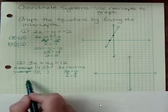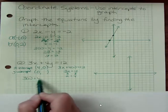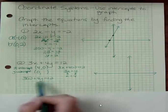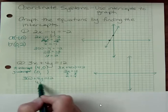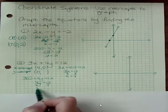And for the second one, what if x is zero? Then you have 3 times zero, 4y equals 12. This goes away. 4y is 12. Dividing both sides by 4, I get y equals 3.